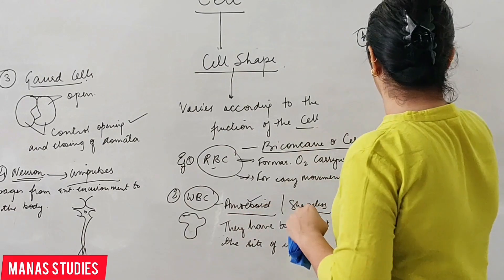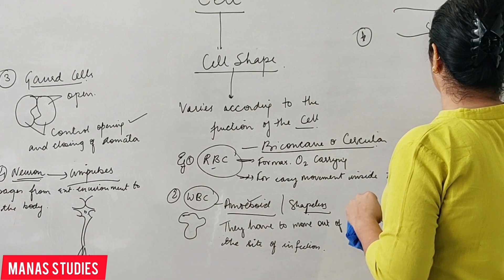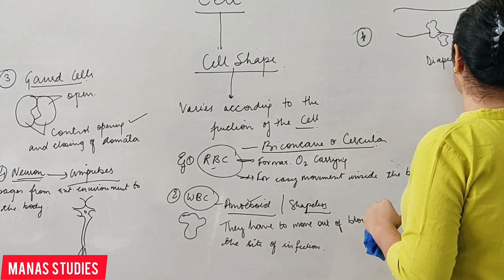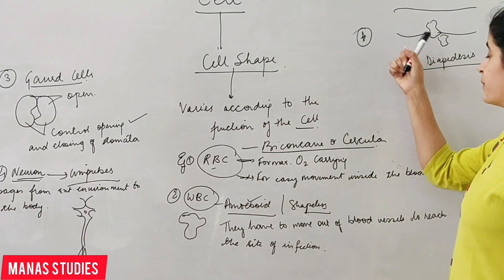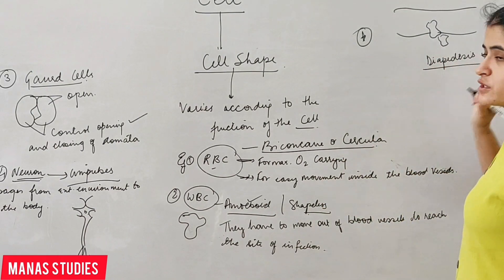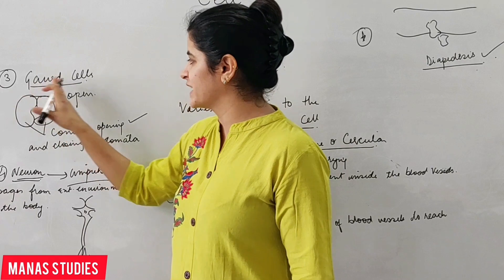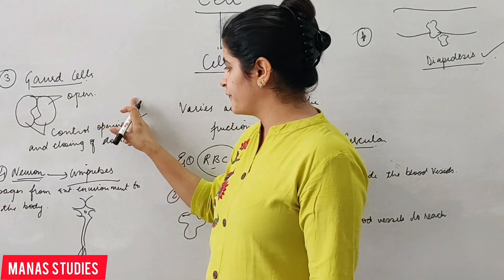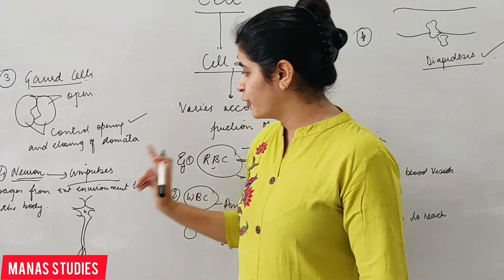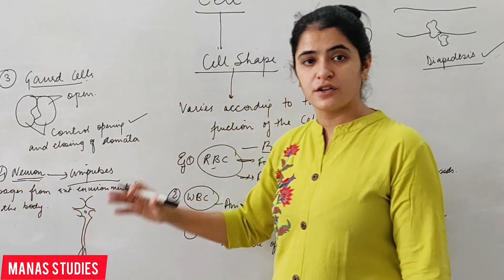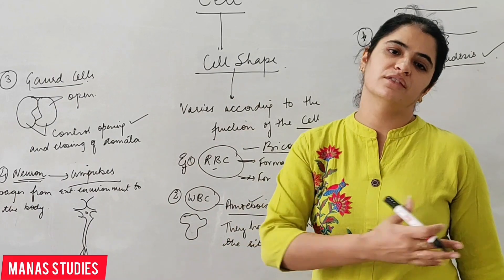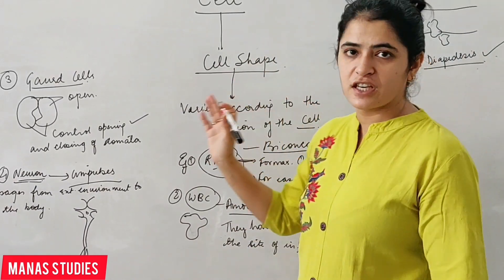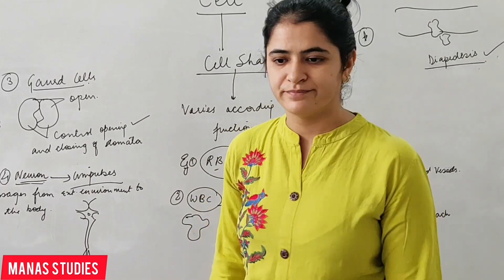When WBCs move out of blood vessels to reach the site of infection, this process is known as diapedesis. Guard cells are bean-shaped or kidney-shaped cells which surround the opening of stomata, and their function is to control the opening and closing of stomata. The neuron's function is to carry impulses from the external environment to the central nervous system. So that is cell shape — different shapes according to the function the cell performs. Thank you, to be continued.